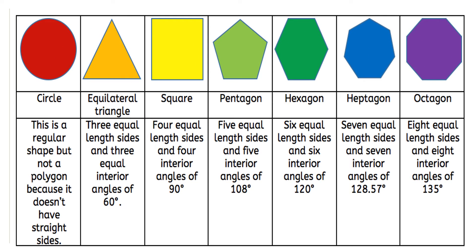Number one is circle. This is a regular shape but not a polygon because it doesn't have straight sides. Next is equilateral triangle. There are three equal length sides and three equal interior angles of 60 degrees.